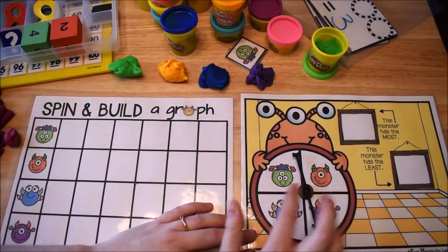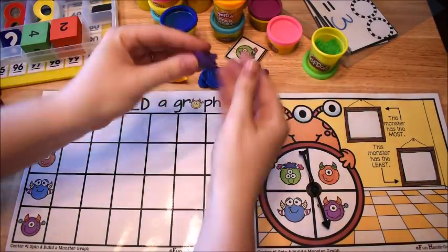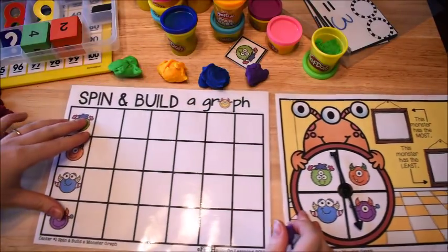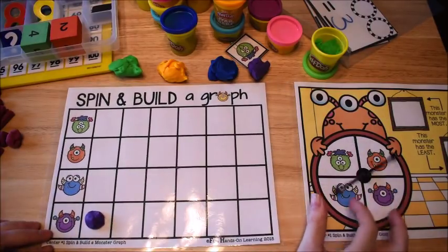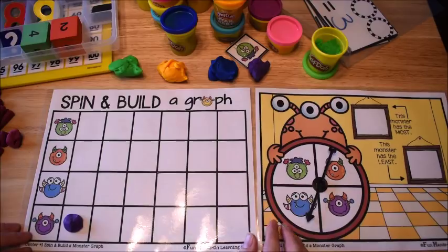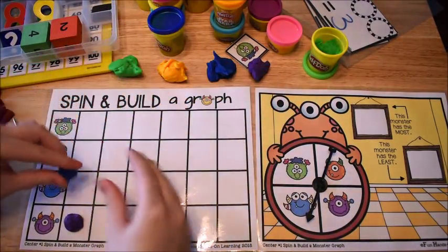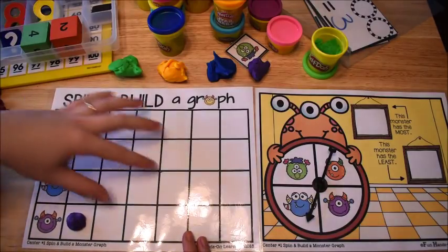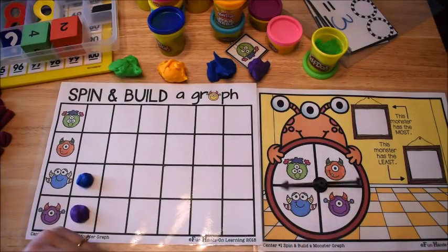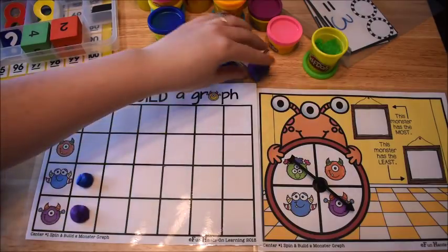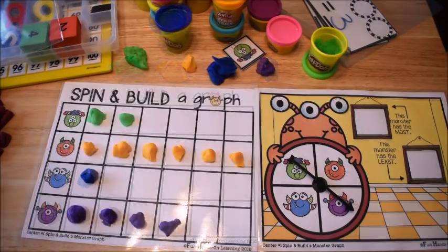Alright, so what they're going to do is they are going to go ahead and spin the spinner. So here we go. And whatever it lands on, I'm just going to slow it down. Okay look, it landed on purple. So I am going to take a little ball of my purple dough, and I am going to place it on my graph. So now I have one here for purple. I'm going to spin again. And this time it landed on blue. So now my blue guy gets a piece.